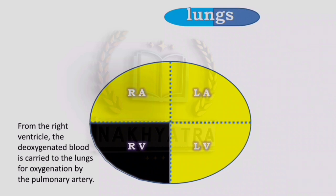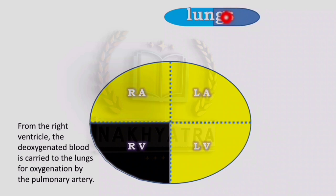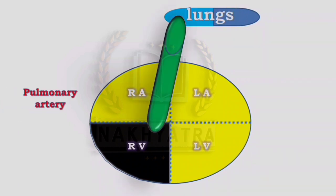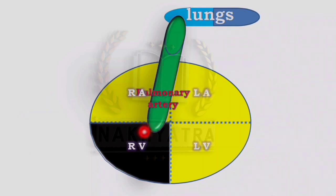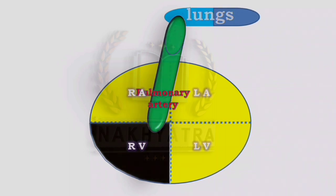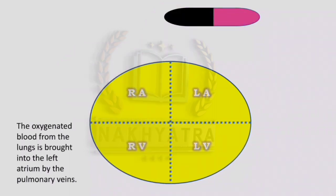From the right ventricle, the deoxygenated blood is carried to the lungs for oxygenation by the pulmonary artery. The pulmonary artery carries the deoxygenated blood from the right ventricle to the lungs for oxygenation.